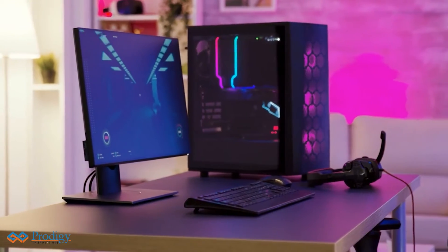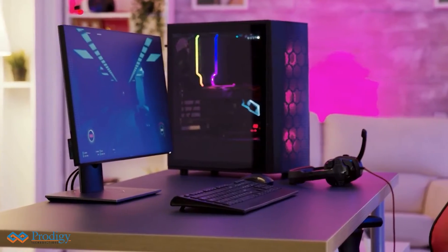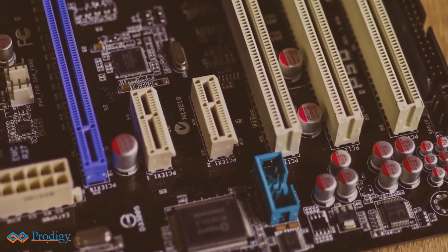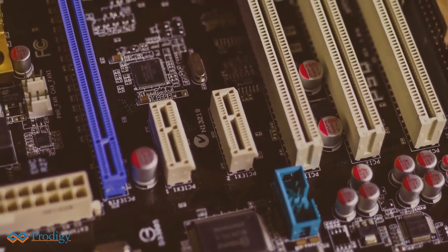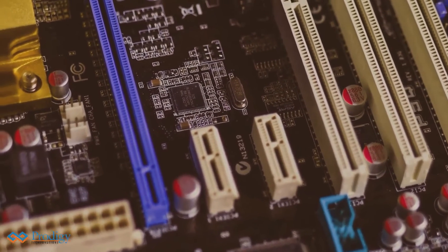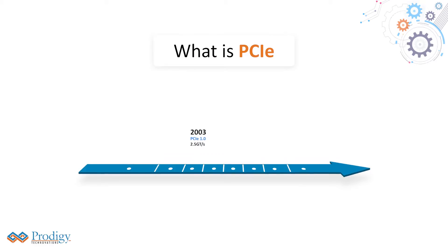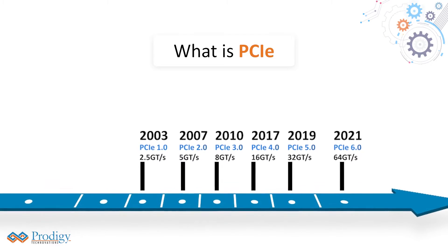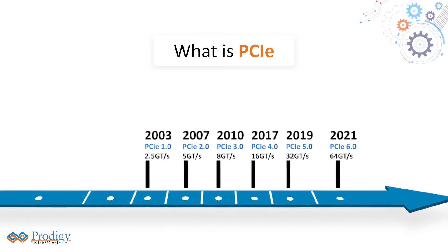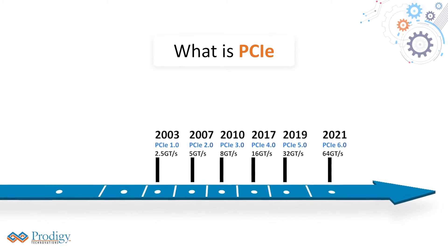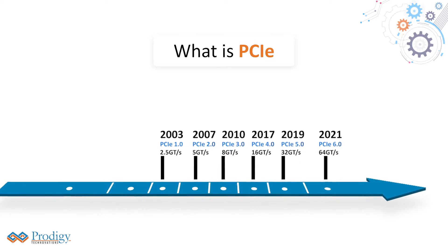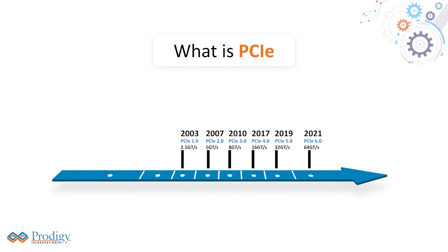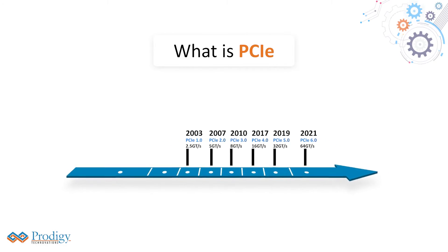PCIE is a motherboard expansion bus standard introduced in 2003 to enable high-speed serial communication between the CPU and its peripheral components. In 2003, the PCIE standard was defined by the PCI-SIG organization. Since then, the PCIE standard has iteratively improved over time to accommodate the latest bandwidth needs of modern computers.